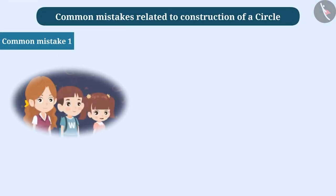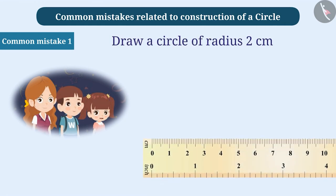Common mistake 1. When students are asked to draw a circle with a radius of 2 centimeters, they open the compass for the required radius. But while measuring the radius, instead of placing the pointed end of the compass on the symbol 0, they often place it on symbol 1 of the ruler. With this, the measurement of the radius in the compass is decreased by 1 centimeter.